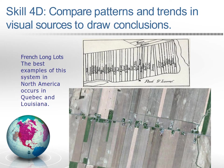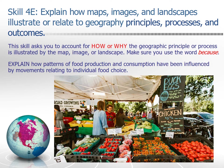Let's take a look at skill 4E: explain how maps, images, and landscapes illustrate or relate to geographic principles, processes, and outcomes. This skill asks you to account for the how and the why — what geographic principle or process is illustrated by the map, image, or landscape. Remind your students to use the word 'because.' Try this one: explain how patterns of food production and consumption have been influenced by movements relating to individual food choice, like this farmer's market in Virginia.